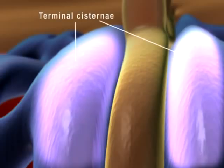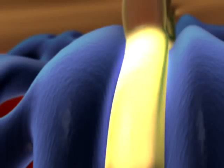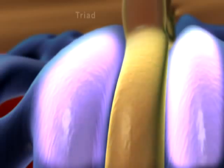Where it abuts the T-tubule, the SR forms sac-like bulges called terminal cisternae. One portion of a T-tubule plus two adjacent terminal cisternae is known as a triad.